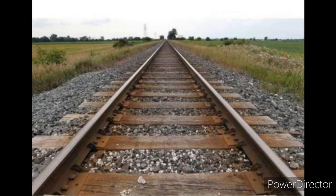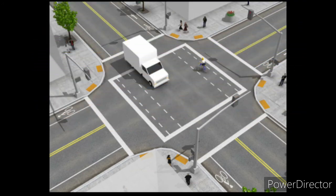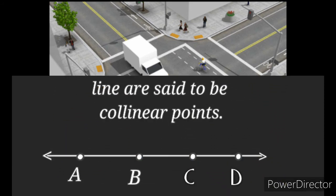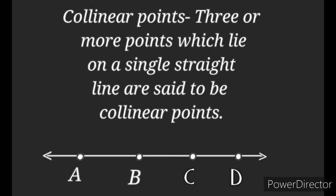An example of parallel lines is a railway track, and an example of intersecting lines is two roads crossing each other. Now we learn about collinear points. Three or more points which lie on a single straight line are said to be collinear points. In this figure, points A, B, C, and D lie on a single straight line, so they are collinear points.